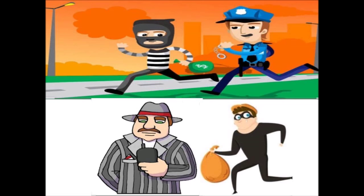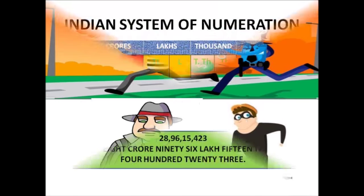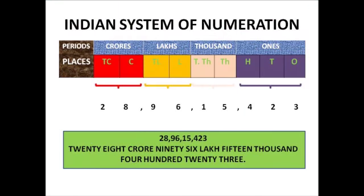When the thief says 'ten crore,' he is giving the amount in the Indian system of numeration. In this system, two things are very important: first is the place value and second is the comma. You can see a table on your screen — the periods are crores, lakhs, thousands, and ones. The place values are: 10 crore, crore, 10 lakh, lakh, 10 thousand, thousand, hundred, tens, and ones.